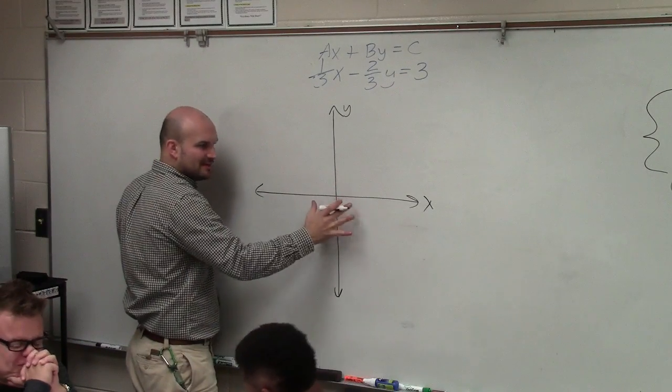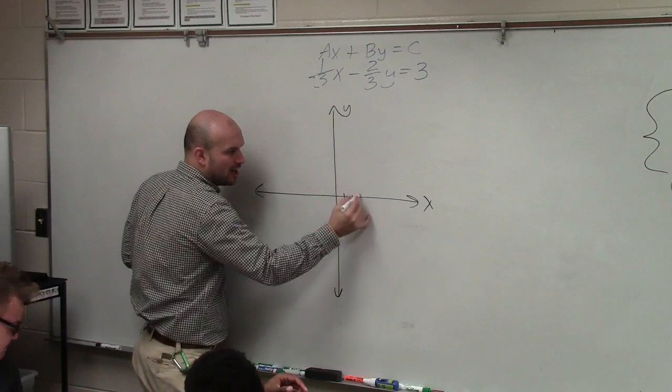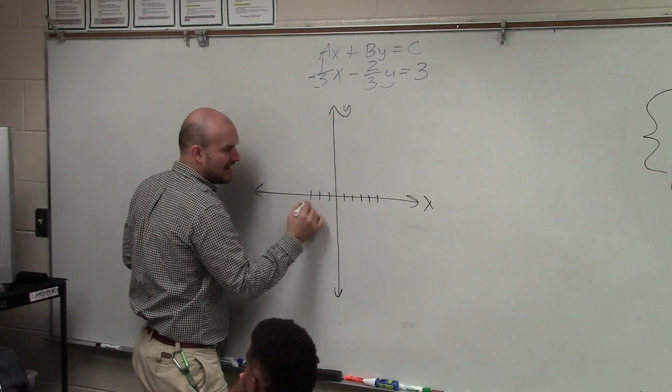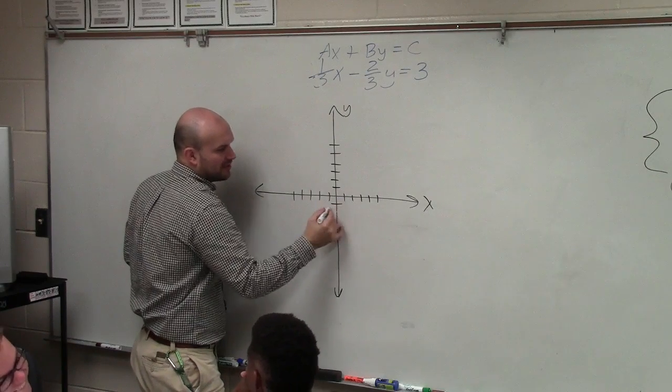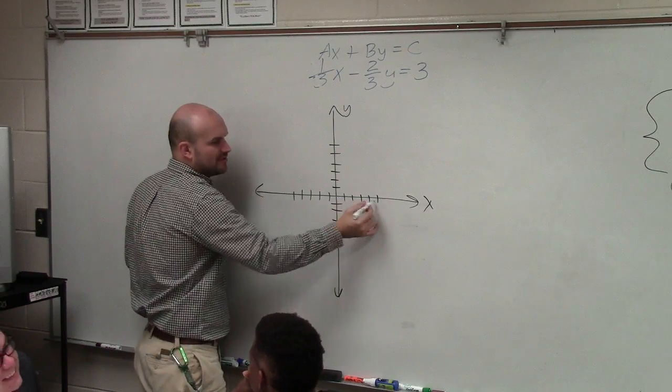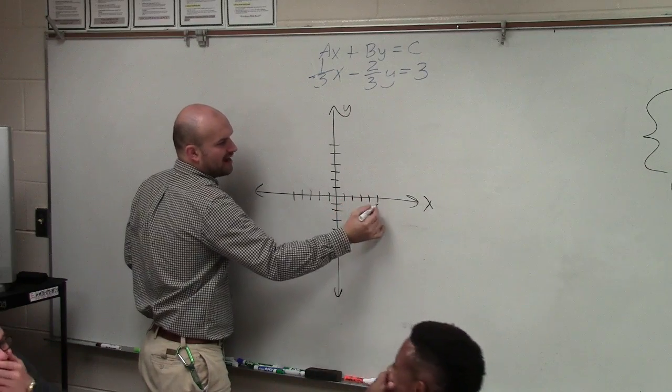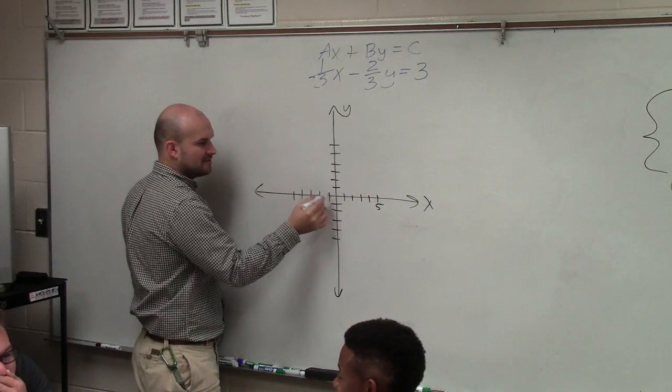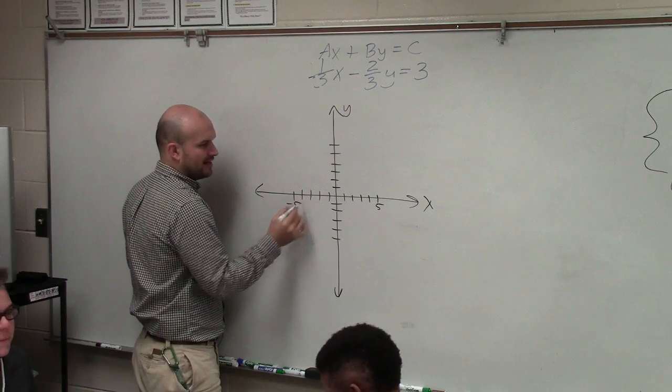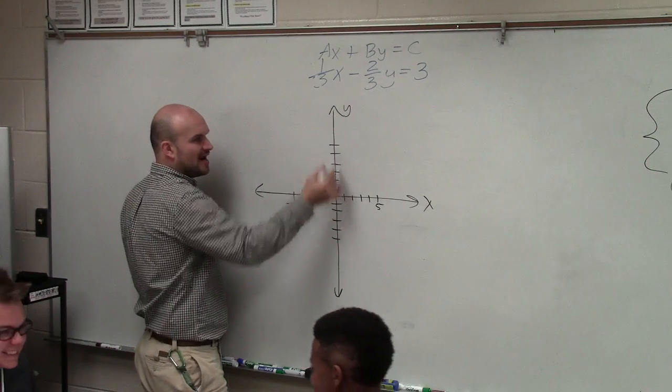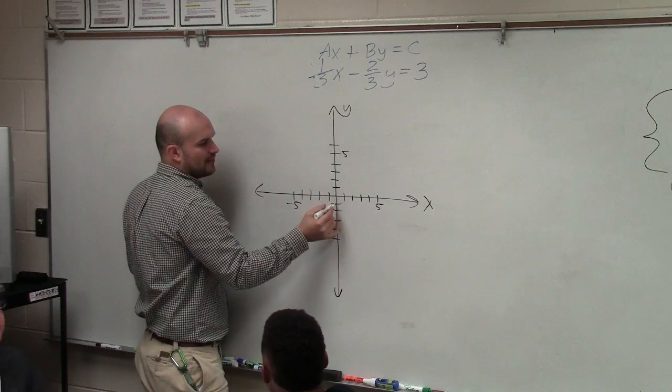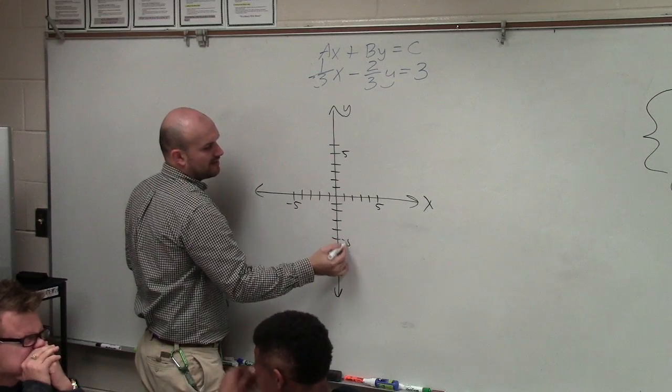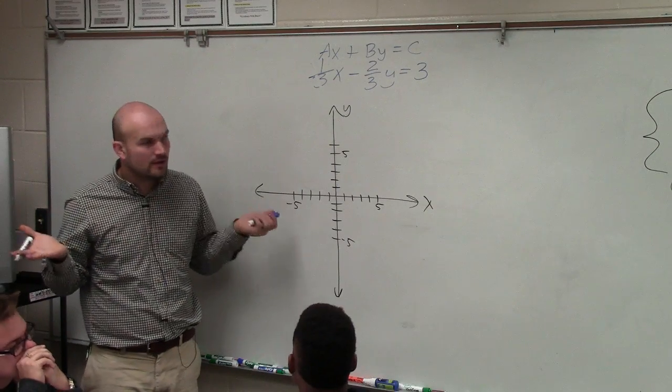Now remember, ladies and gentlemen, the x and y-axis - all they are are number lines. The x-axis is a horizontal number line, the y-axis is a vertical number line. Numbers to the right (1, 2, 3, 4, 5) are positive. Numbers to the left are negative. On the y-axis, positive numbers are up top, and going down are negative. Everybody follow me with this? Yes sir. OK.